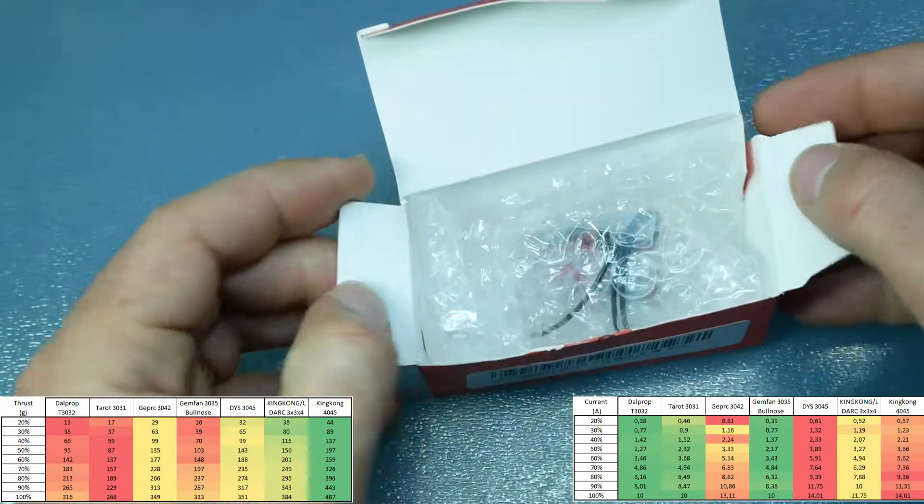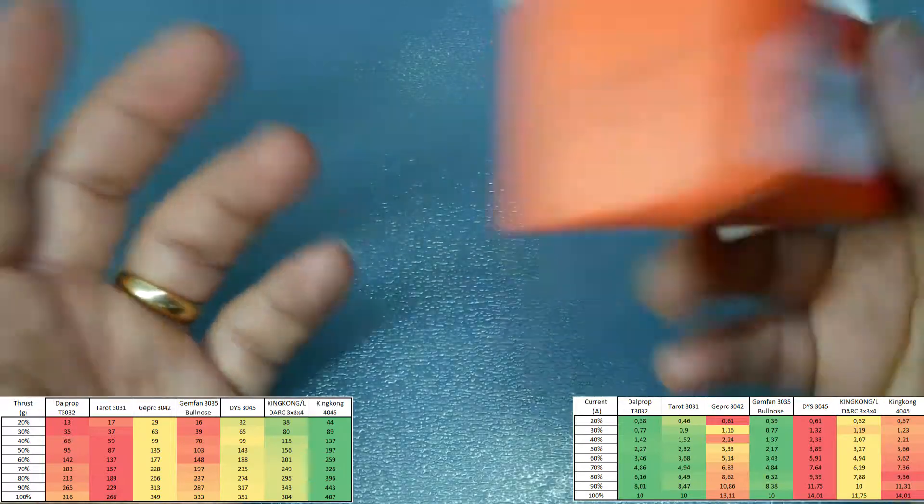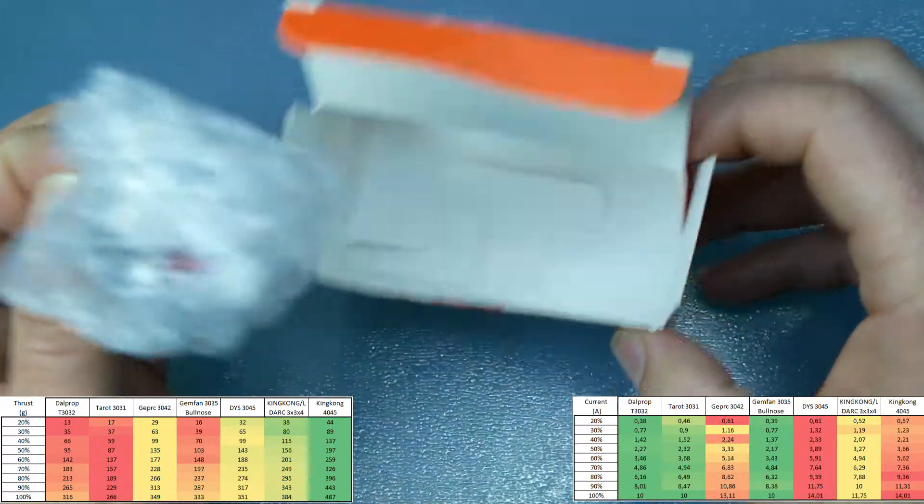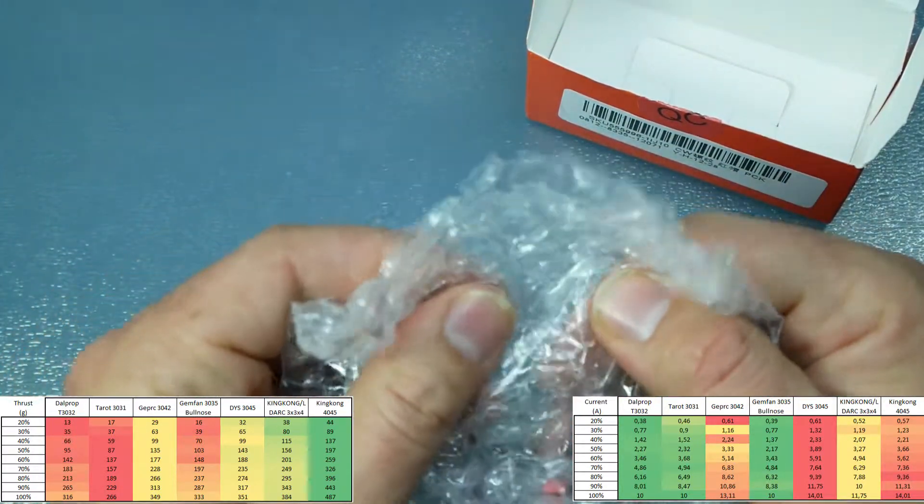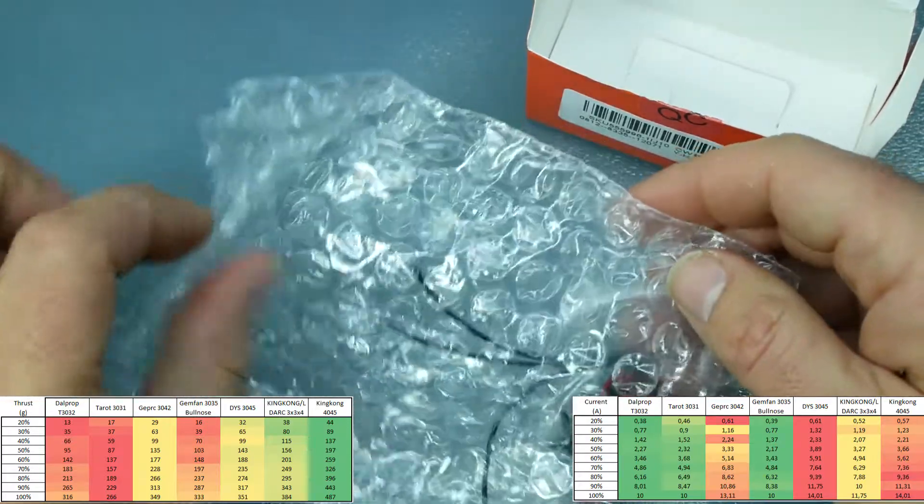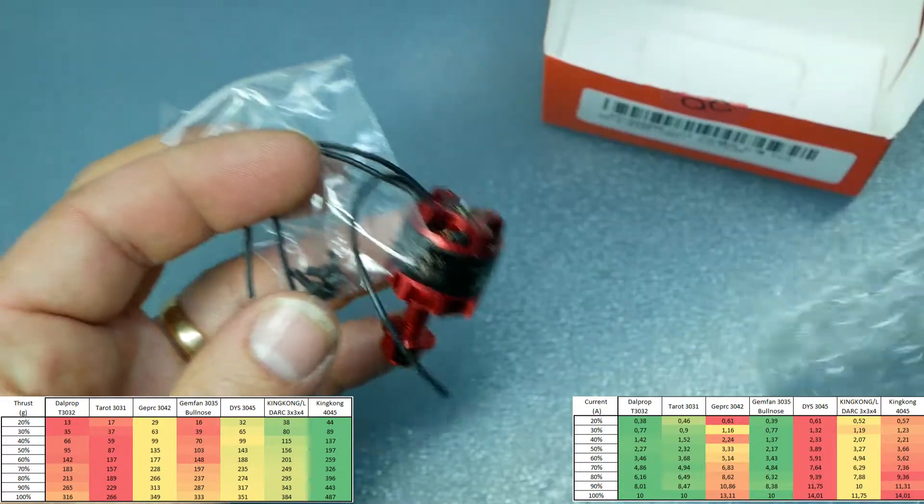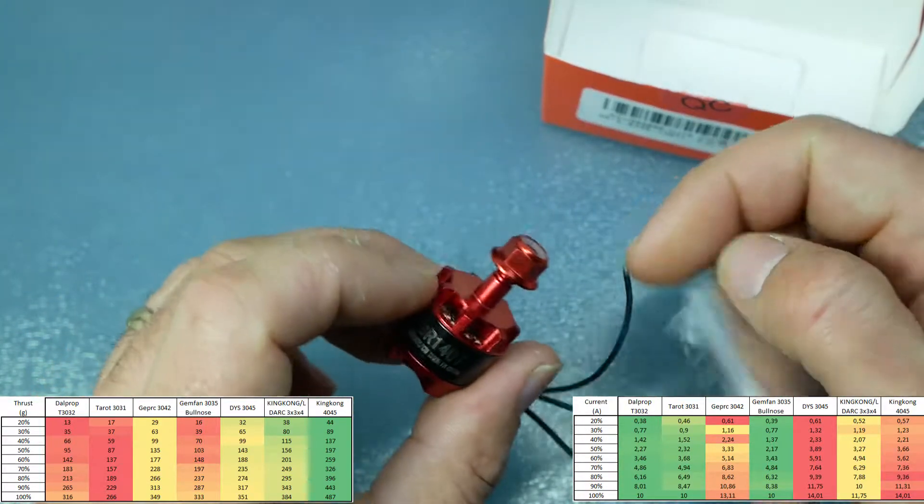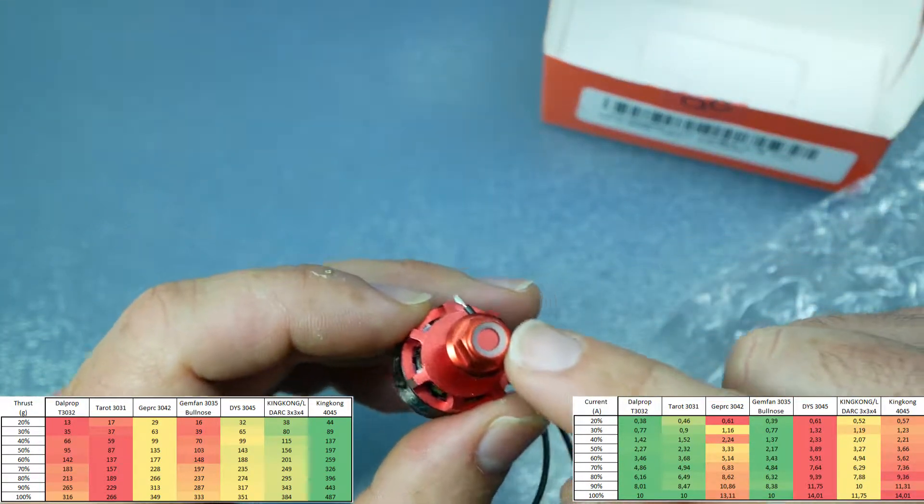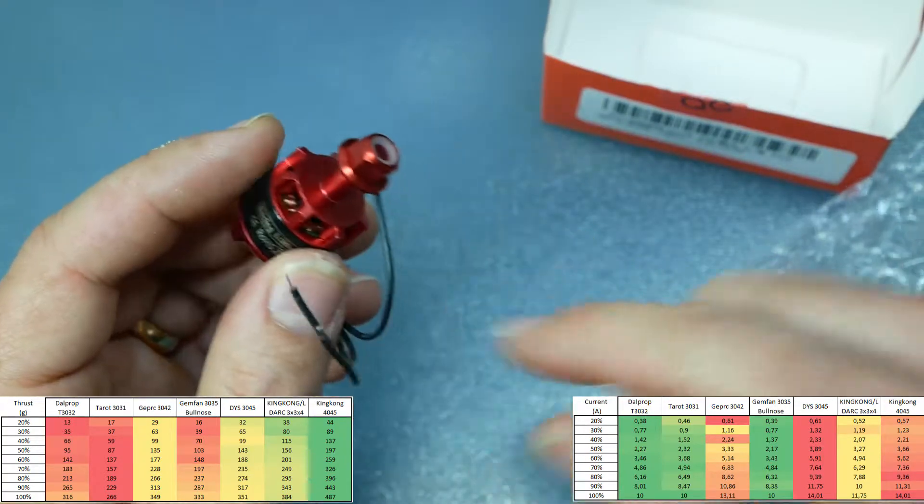Inside the package is a simple cardboard box with plastic inside. The package contains the motor itself and screws. One nut came on the motor itself as you can see.